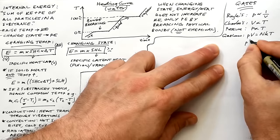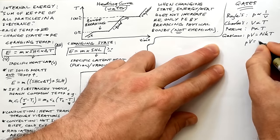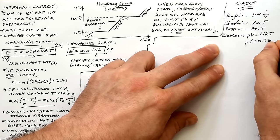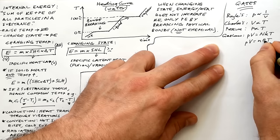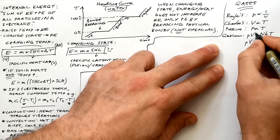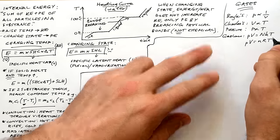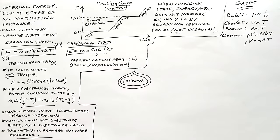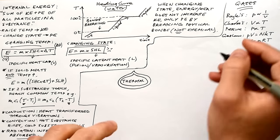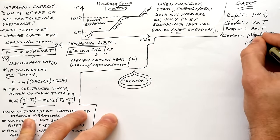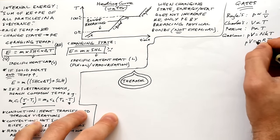The complete gas law is PV equals NkT or nRT. Big N is number of molecules, little n is number of moles. K is the Boltzmann constant, R is the gas constant — it's just converted from k. NRT is much easier to deal with because they're much nicer numbers, R being 8.31.